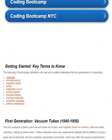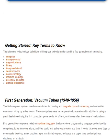Key terms to know: the following 10 technology definitions will help you better understand the five generations of computing: computer, microprocessor, magnetic drums, binary, integrated circuit, semiconductor, nanotechnology, machine language, assembly language, and artificial intelligence.